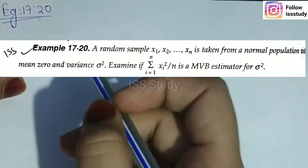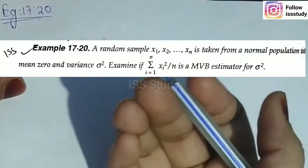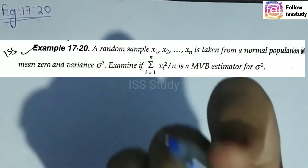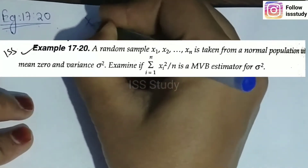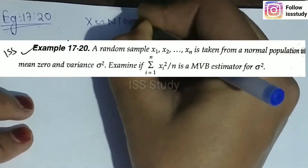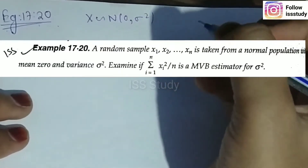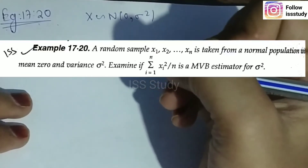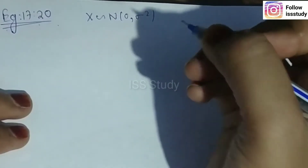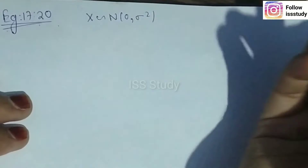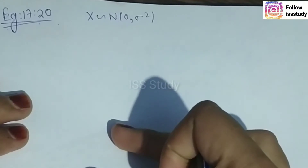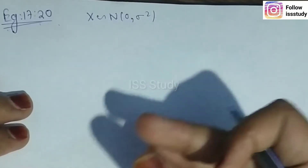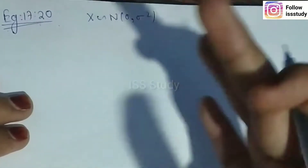This example says that a random sample x1, x2, ..., xn is taken from a normal population with mean zero and variance sigma square. We can write x ~ Normal(0, σ²). We have to examine if the estimator (1/n)Σxi² is an MVB estimator for σ².